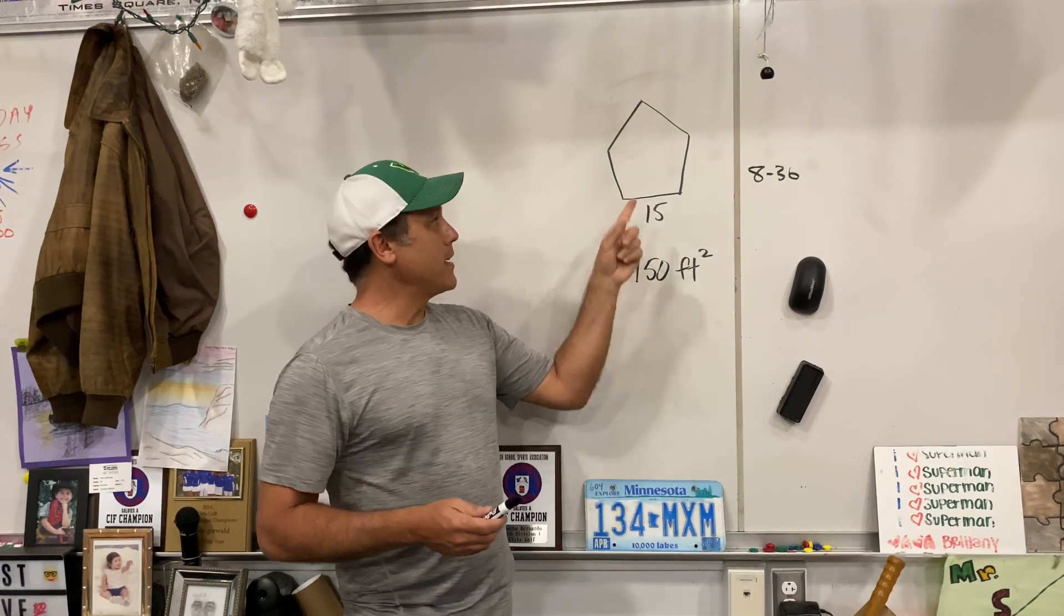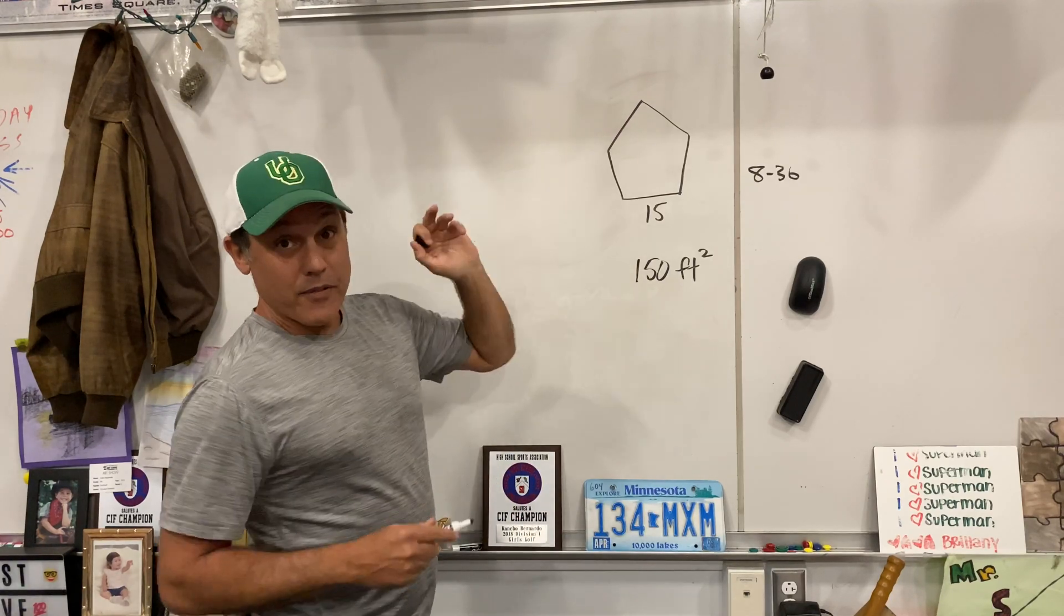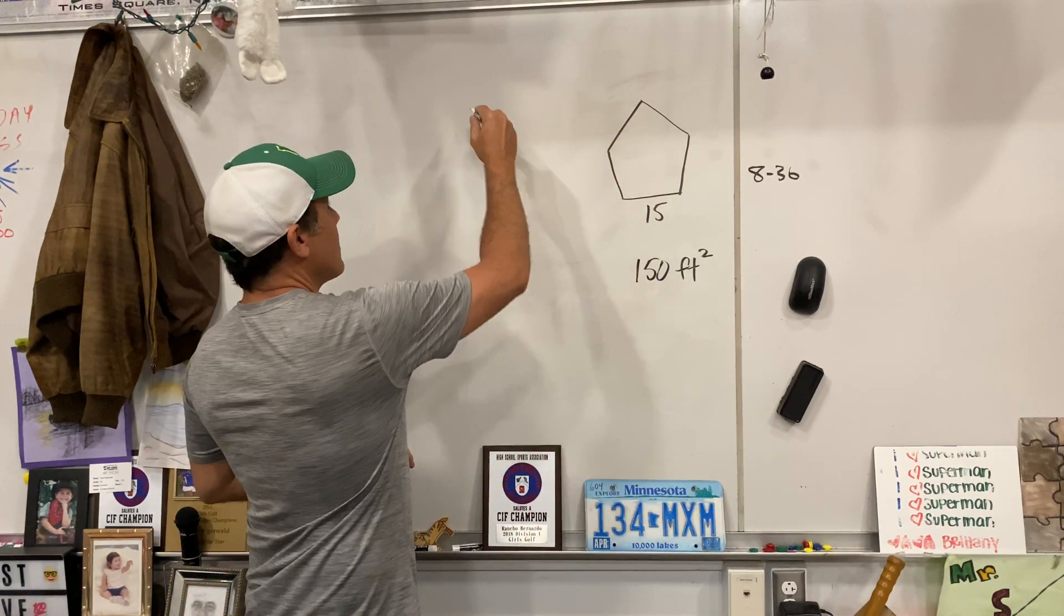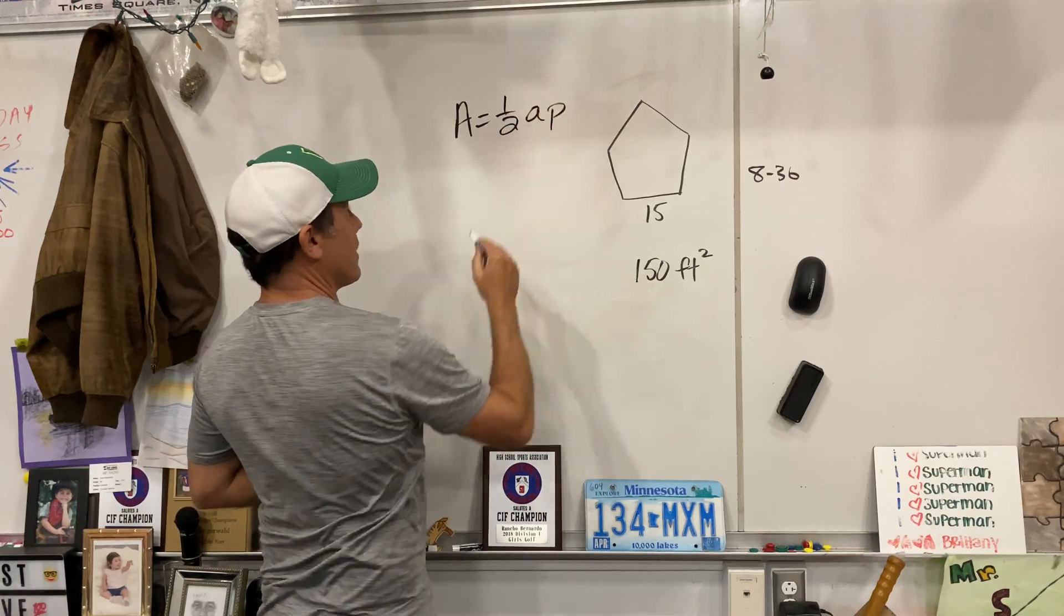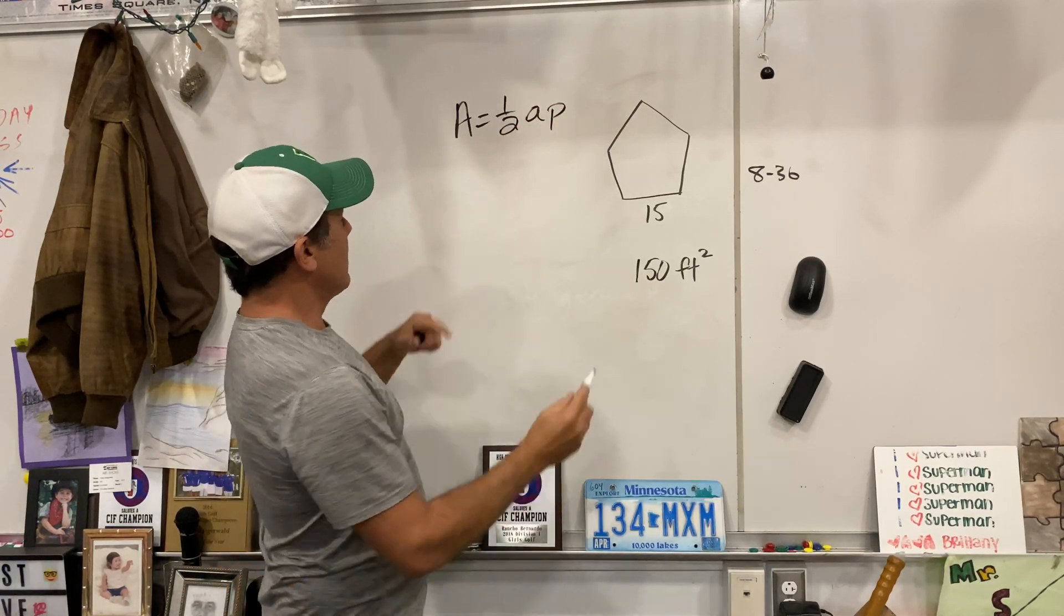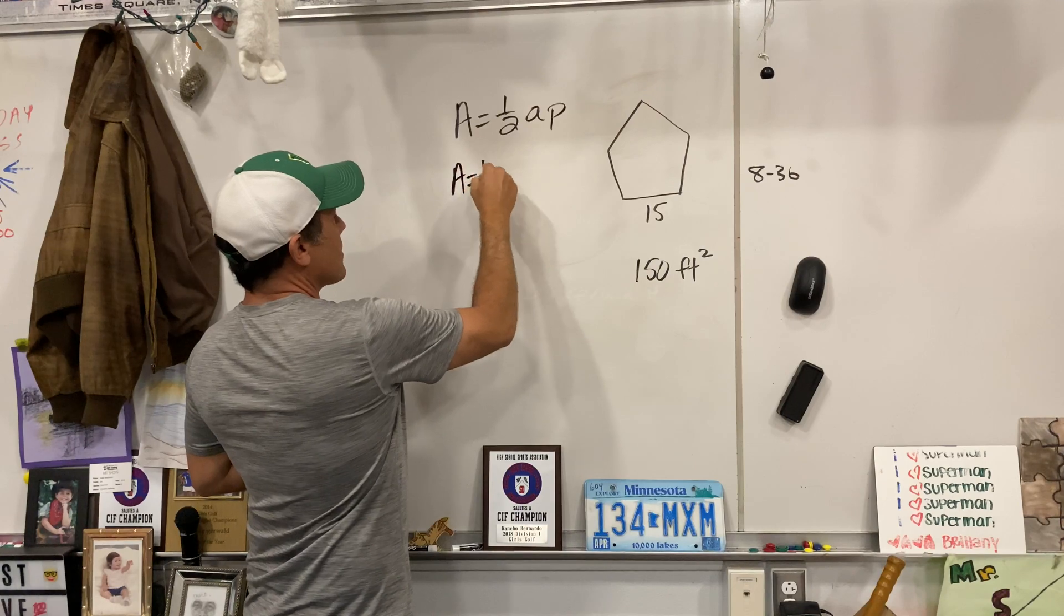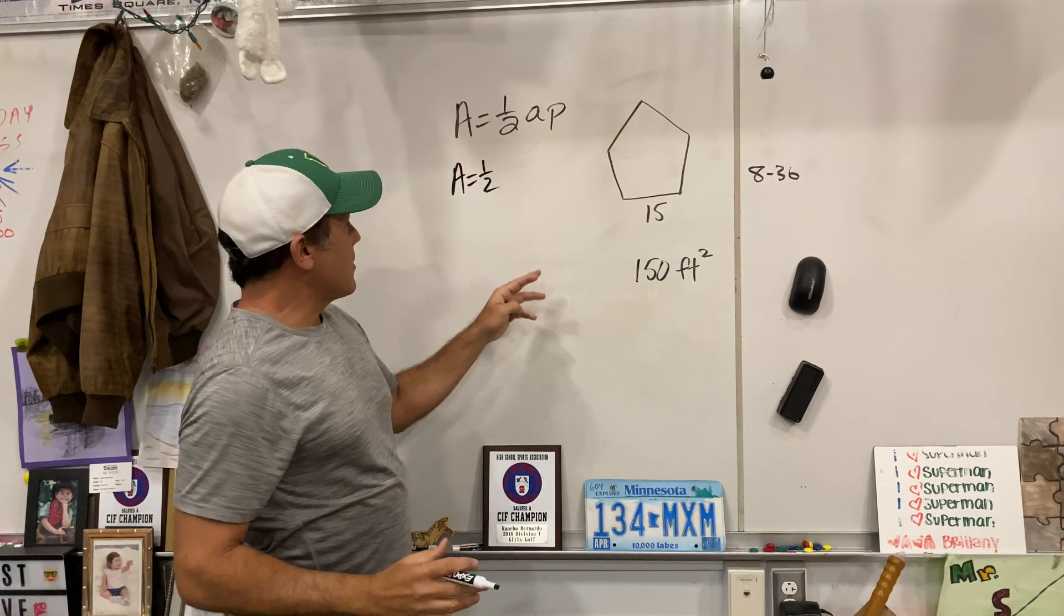Bottom line, we've got to find the area of this bad boy. Well, what's the formula for area of a regular polygon? You remember it? A equals 1/2 AP. Well, we've got to find, let's just, what I like to do is this: try and get stuff that is easy.